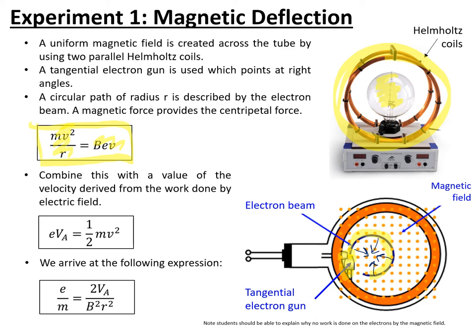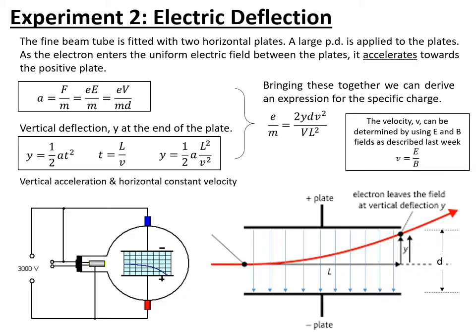We have circular motion happening. We combine this with the fact that the electron was accelerated: the work done by the electric field inside the electron gun equals the gain in kinetic energy. Combining these two expressions gives our final expression for the specific charge: e/m = 2Va / B²r², where Va is the anode voltage. You should be able to derive that from those two equations — it's a few stages but not complicated math. Have a go at that yourselves as a little challenge.